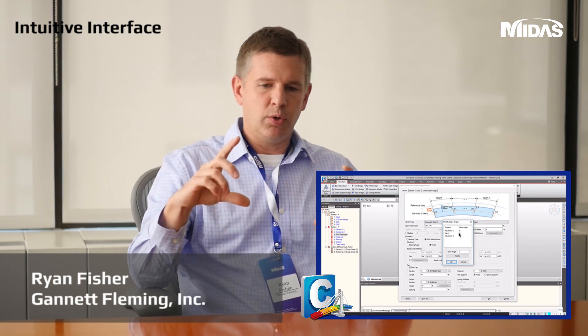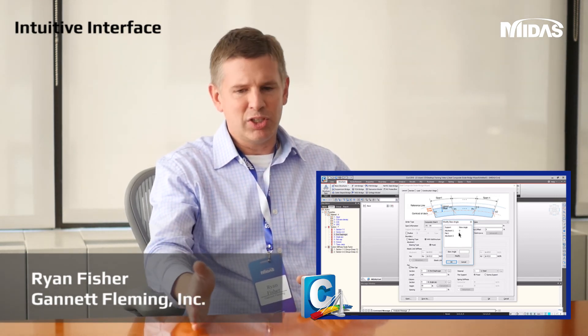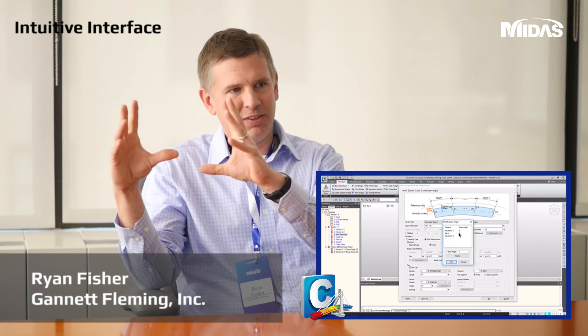I like that there's a visual diagram to define inputs — like the width of the cap or the height of the column. With some Leap software you have to dig through the manual to figure out which way the skew angle goes, but here you just have a picture you can reference to define user inputs. That's very nice. Also, the analysis output can be adjusted depending on what you need, which makes it very efficient — you don't spend time analyzing things you don't need.